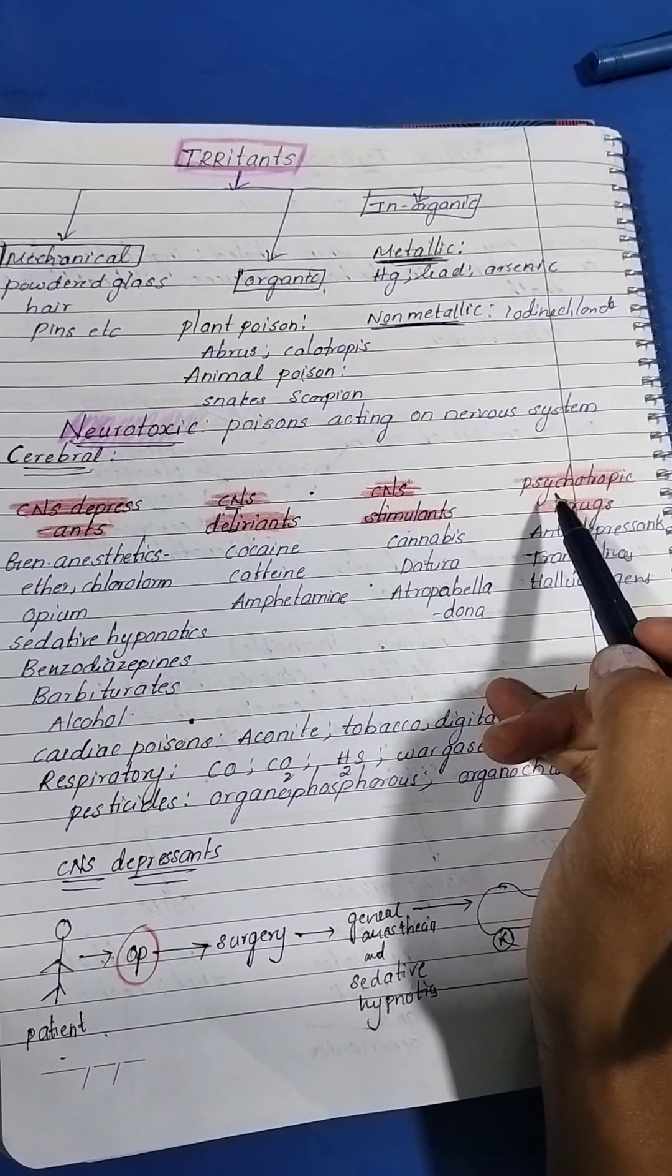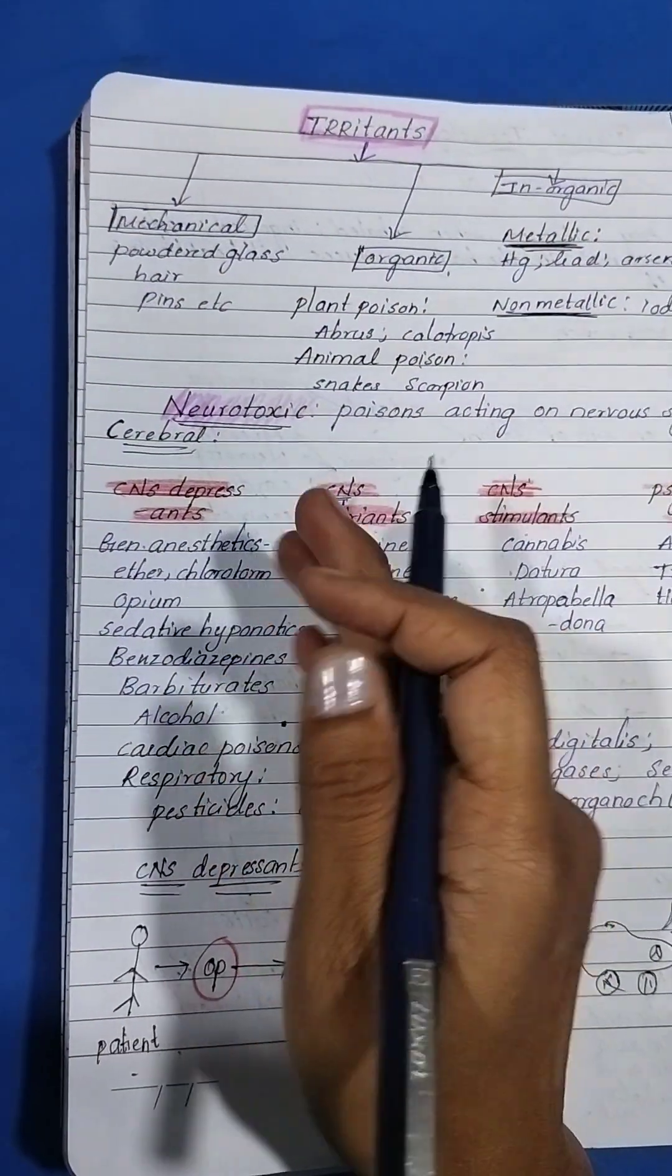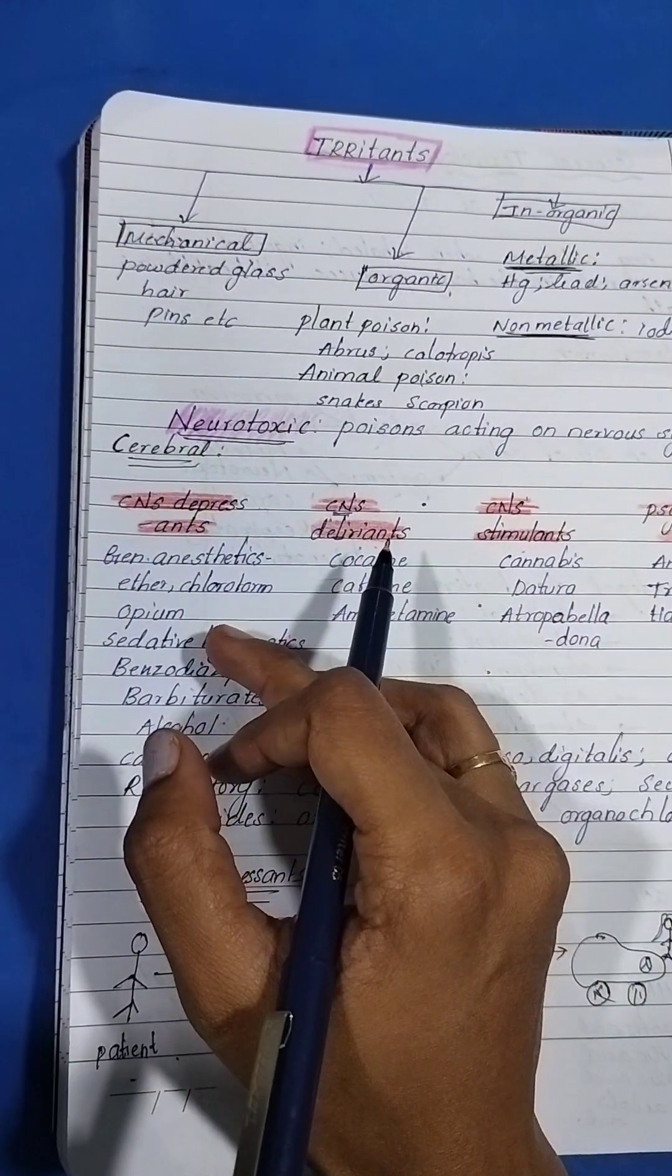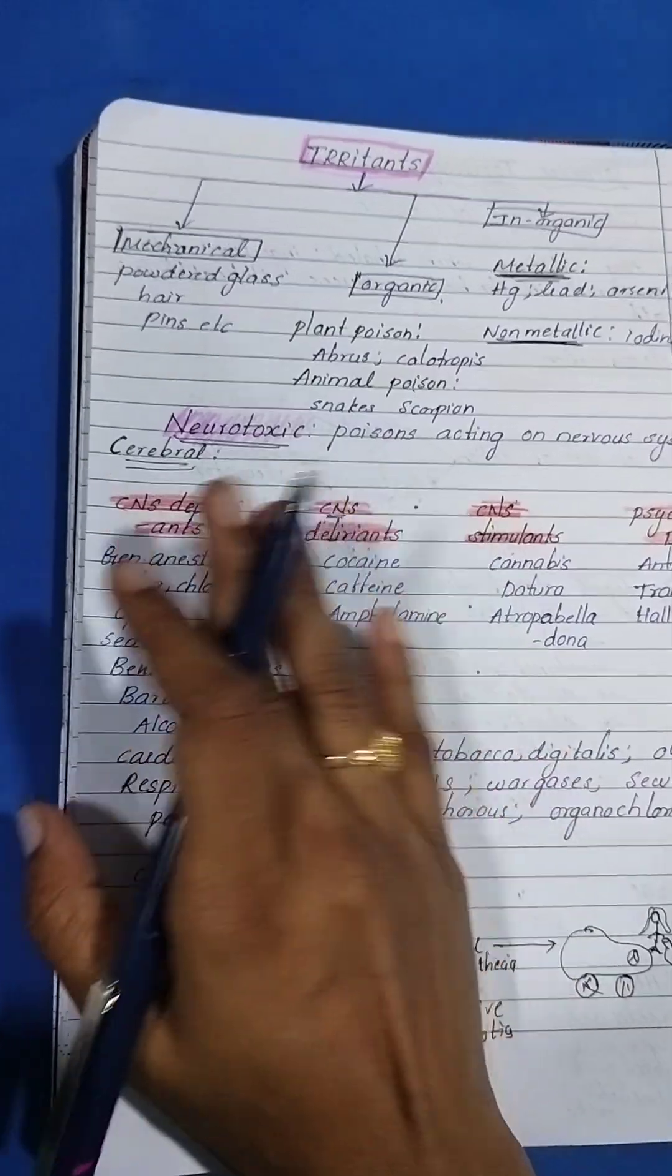They may ask you in the viva what are the CNS depressants, what are the CNS delirants. So we have to remember these sub-classifications.